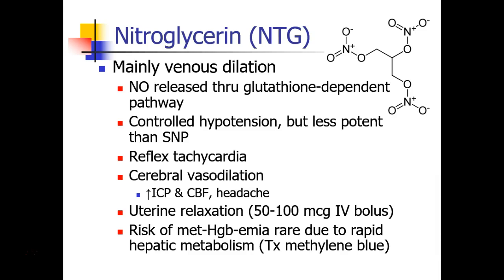Nitroglycerin can be used for a variety of possibilities. It can be used for controlled hypotension — it's not as potent as sodium nitroprusside, which we'll discuss next, but it is effective at dropping blood pressure. We expect to see some reflex tachycardia as we drop the blood pressure. Nitroglycerin does cause some cerebral vasodilation, leading to an increase in intracranial pressure and cerebral blood flow.